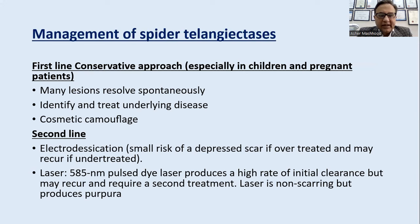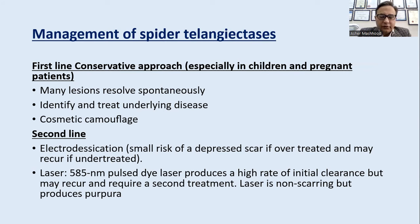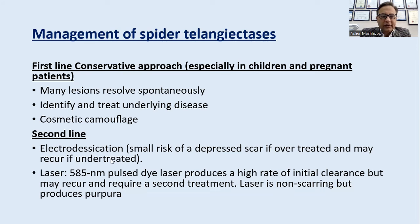Management: first line is a conservative approach — since lesions dissolve spontaneously, wait and see, identify and treat the underlying disease, and use cosmetic camouflage. Second line is electrodesiccation: the central arteriole is treated with electrocautery, with risk of depressed scar if over-treated. Pulse dye laser at 585 nanometers produces clearance but may recur; the benefit of laser over electrodesiccation is that it does not leave a scar.